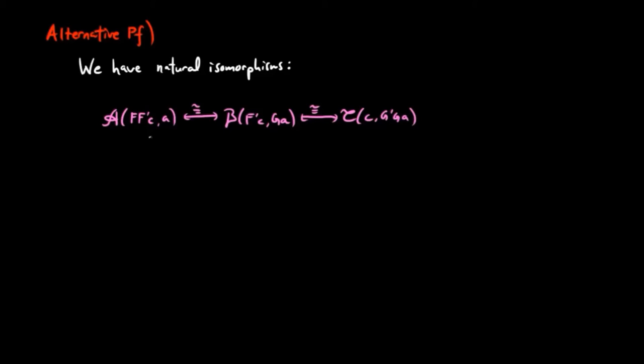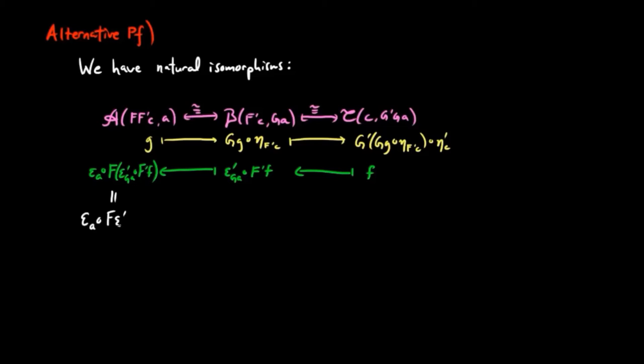Then given an A morphism G from F F prime C to A, by the definitions of the isomorphisms, it gets sent to G prime GG eta F prime C eta prime C. Conversely, for a C morphism F from C to G prime G A, it gets sent to epsilon A composed with F epsilon prime GA composed with F prime F, which equals epsilon A composed with F epsilon prime G A composed with F F prime F.